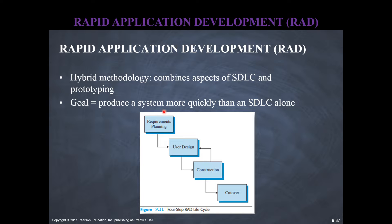If you look at the phases or steps under the RAD approach, you see that it's very similar to prototyping, where there's initial requirements planning, then you present those initial requirements to users, then you construct something, then once it's constructed you receive feedback from users, and then you show them again and receive additional feedback. The prototyping iterations are here where you're circling, and then at some point at the cutover date, after say five iterations, you are done and this is your final system.